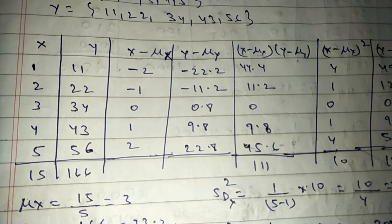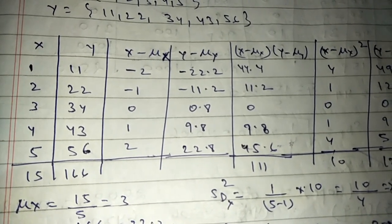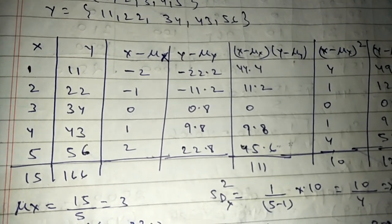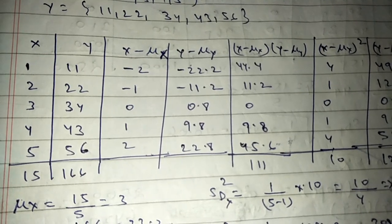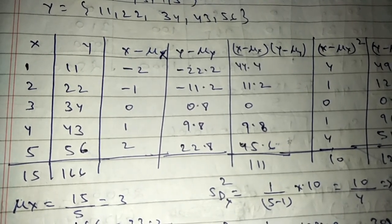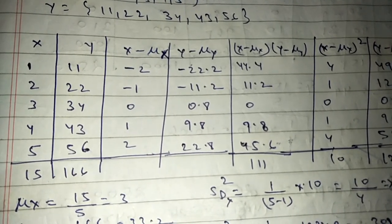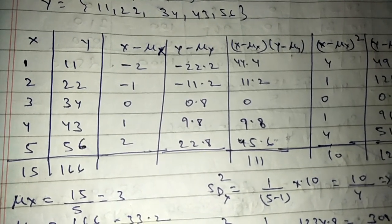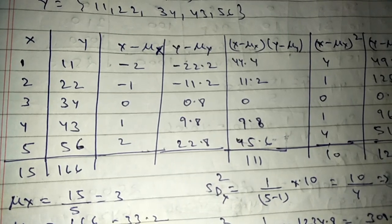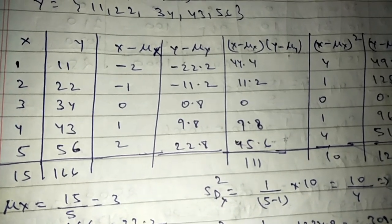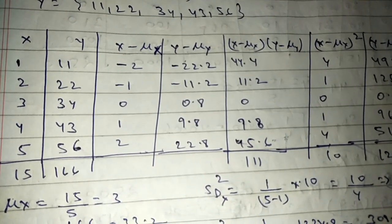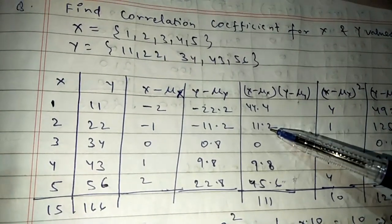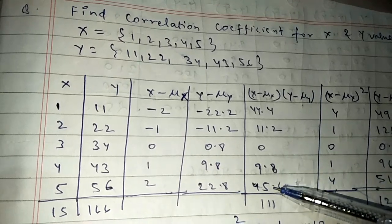Now calculate (x minus μx) multiplied by (y minus μy). Multiply the two columns: -2 times -22.2 = 44.4, -1 times -11.2 = 11.2, 0 times 0.8 = 0, 1 times 9.8 = 9.8, 2 times 22.8 = 45.6. The summation of this row gives: 44.4 + 11.2 + 0 + 9.8 + 45.6 = 111.